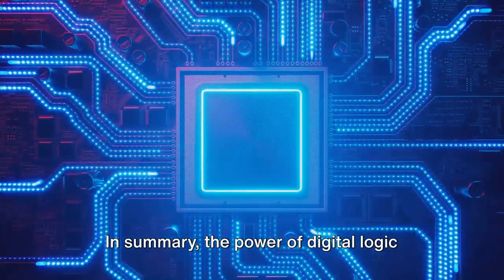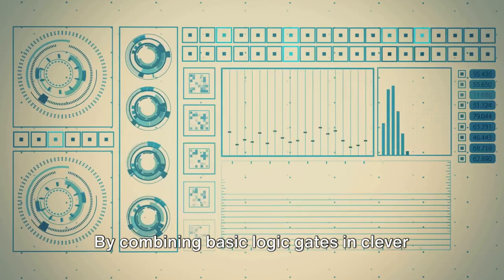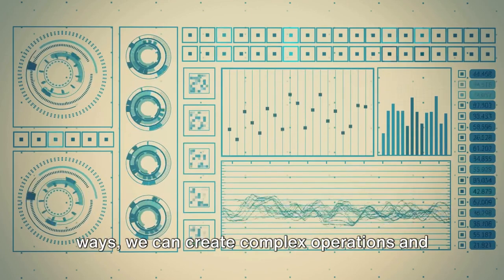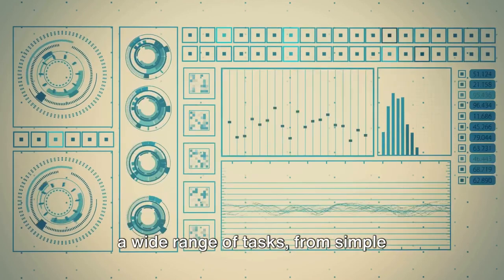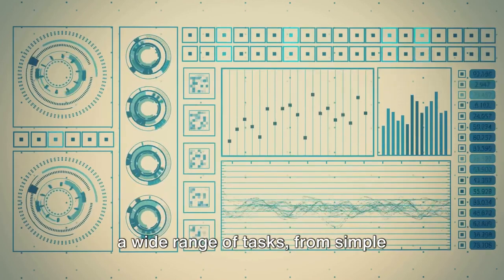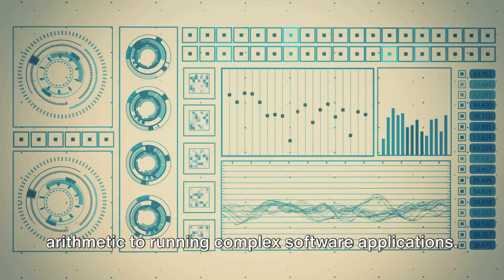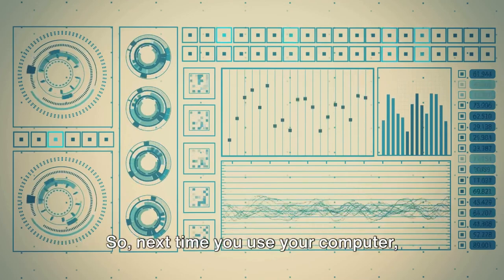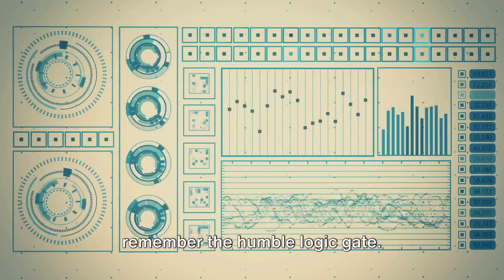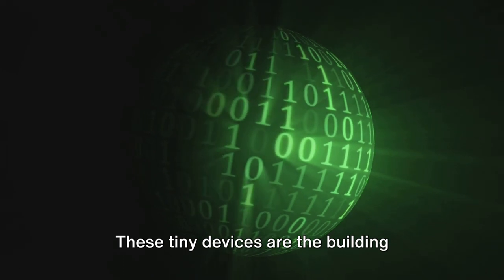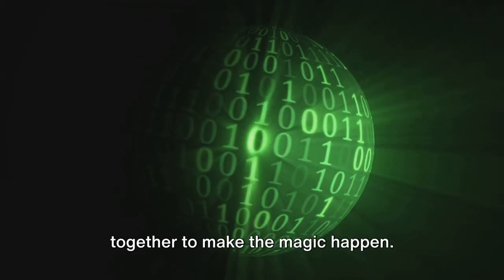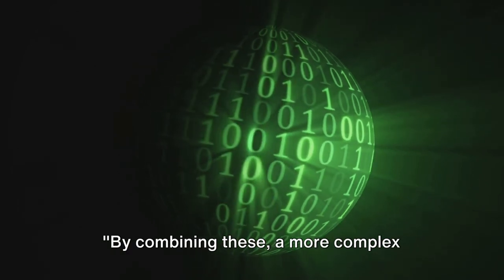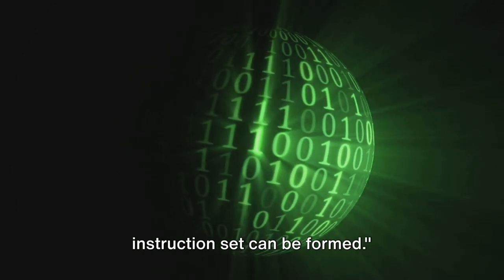In summary, the power of digital logic design lies in its simplicity. By combining basic logic gates in clever ways, we can create complex operations and instruction sets. This is how a computer is able to perform a wide range of tasks, from simple arithmetic to running complex software applications. So, next time you use your computer, remember the humble logic gate. These tiny devices are the building blocks of the digital world and they work together to make the magic happen. By combining these, a more complex instruction set can be formed.